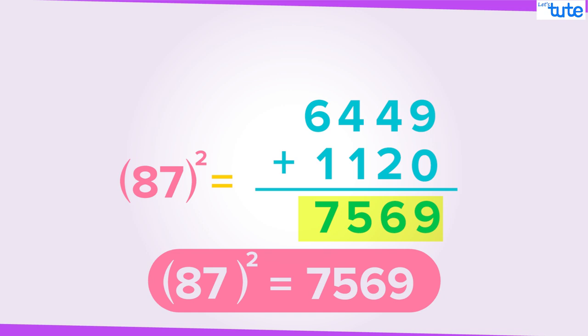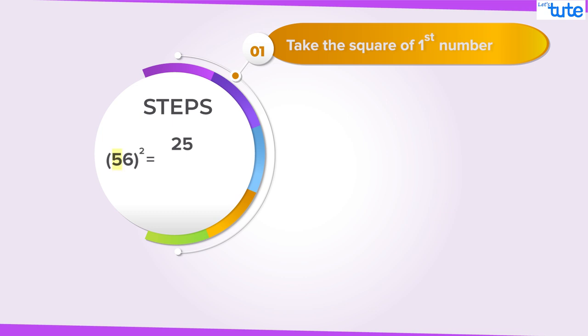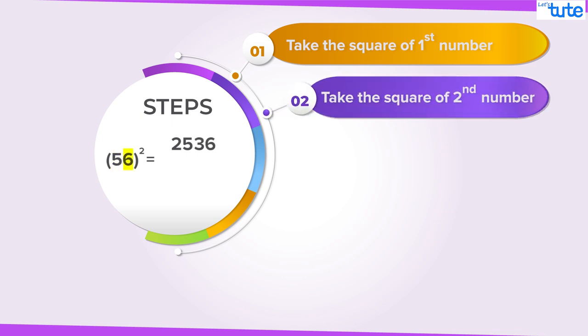Well guys, let's just go through the steps once again. First step is, take the square of the first number. Second, take the square of the second number. Add a 0 below the last digit.